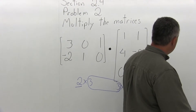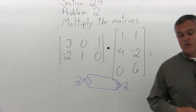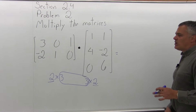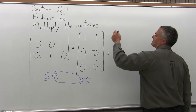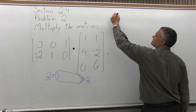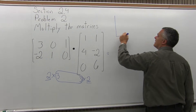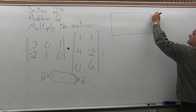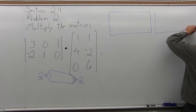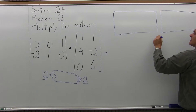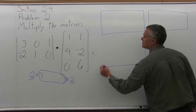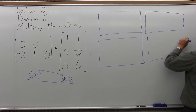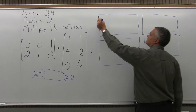The outer numbers of the dimensions tell you the size of the solution. Not only do I know that a solution exists because the inner numbers match, but the solution will be a 2 by 2 — it will have two rows and two columns. Let me set up a big matrix next to this and write out all the work in it, then we'll write a smaller version when we have the final answer. So our answer will have this format, two rows and two columns.